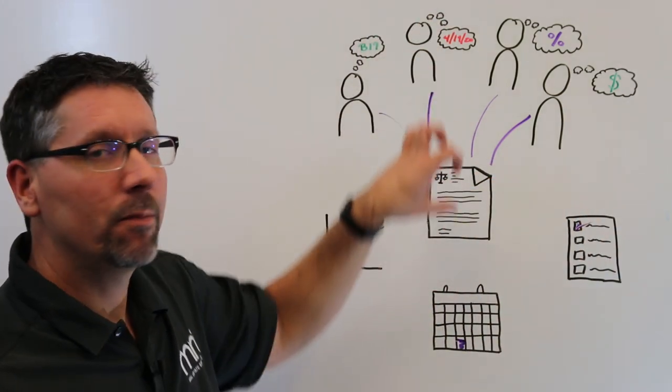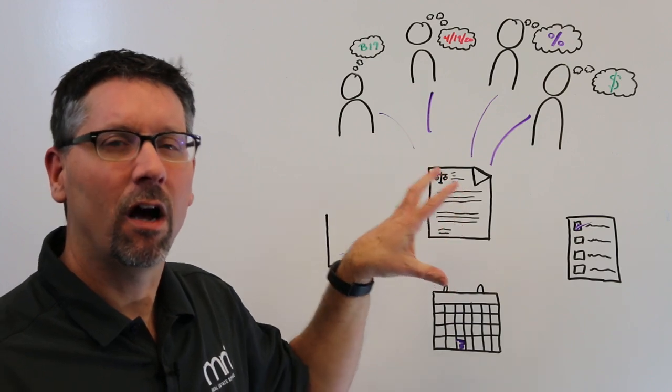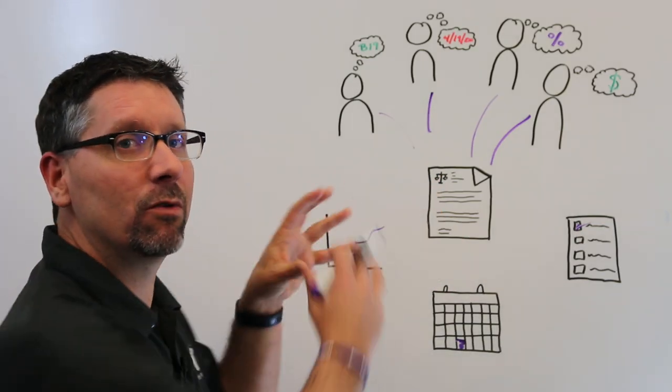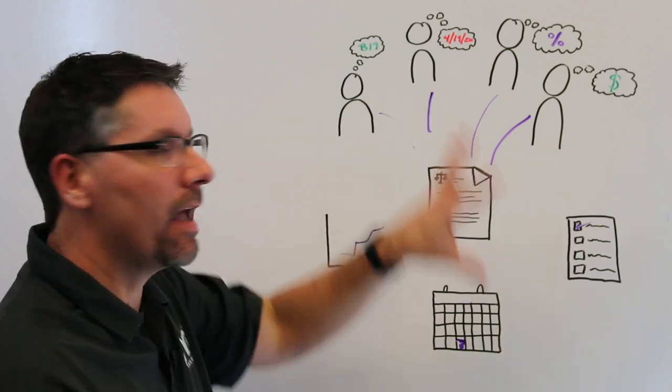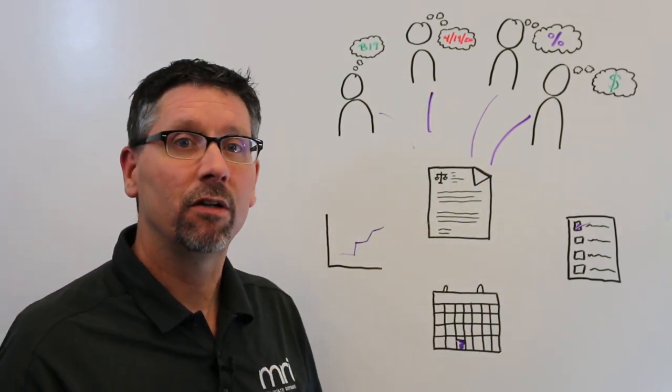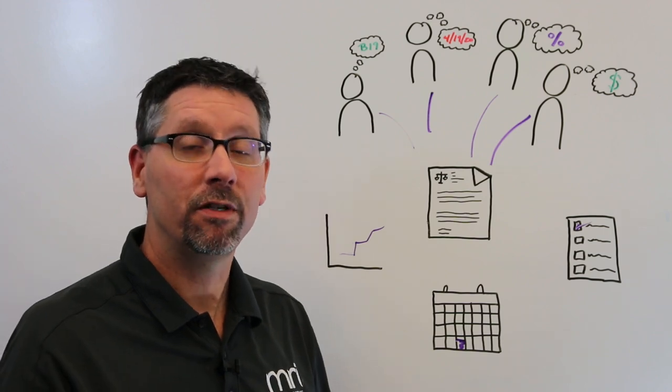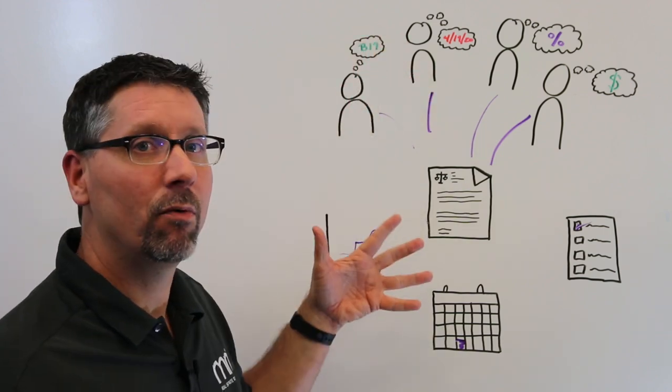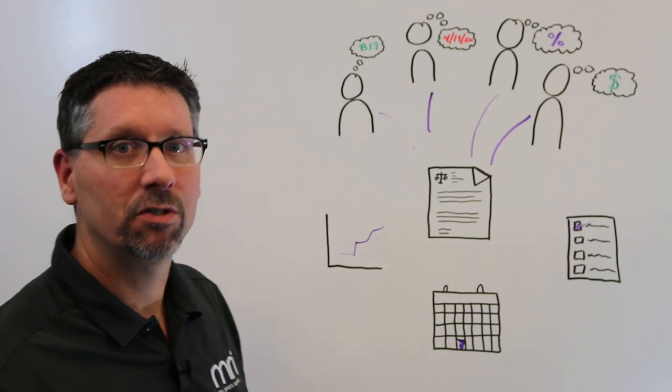So all this information comes into a relatively unstructured document. We need to extract that information out so it's usable and operate our business from that perspective. Using tools like artificial intelligence can really make that process more efficient and not only give us those data points, but link us back to the source document of the lease.